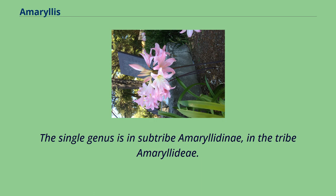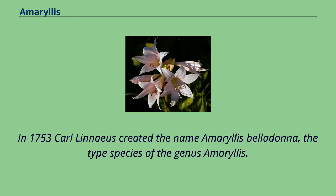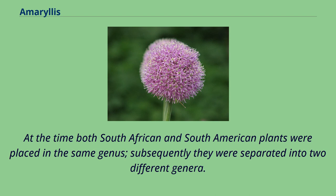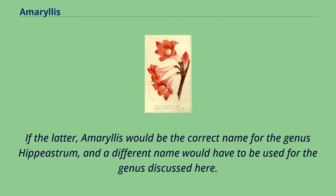The single genus is in subtribe Amaryllidinae, in the tribe Amaryllideae. The taxonomy of the genus has been controversial. In 1753 Carl Linnaeus created the name Amaryllis belladonna, the type species of the genus Amaryllis. At the time, both South African and South American plants were placed in the same genus; subsequently they were separated into two different genera. The key question is whether Linnaeus's type was a South African plant or a South American plant. If the latter, Amaryllis would be the correct name for the genus Hippiastrum, and a different name would have to be used for the genus discussed here.